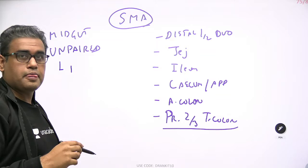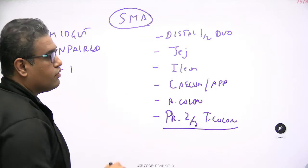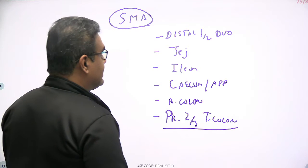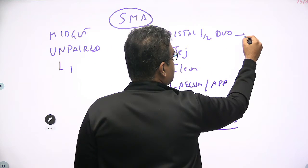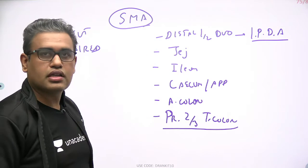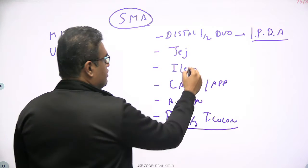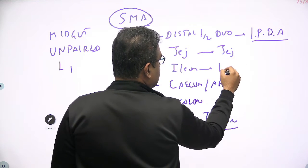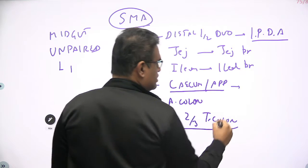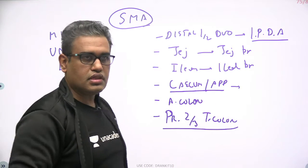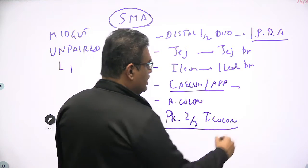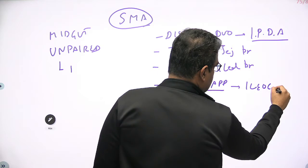So all of that lies in the superior mesenteric artery zone because it is a derivative of the midgut. We can understand the branches from here. If we look at the structures: for the distal half of the duodenum, the inferior pancreaticoduodenal artery will supply the lower part of the duodenum as well as the pancreas. The jejunum and ileum will be supplied by jejunal and ileal branches. For the cecum and appendix, lying at the right iliac fossa, you have the ileocolic artery.